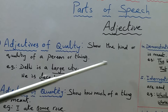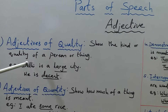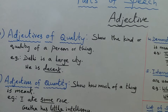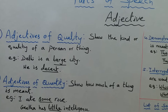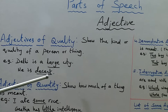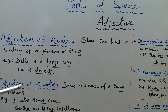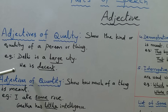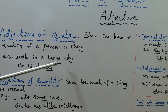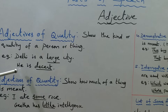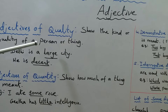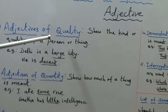Adjectives of quality show the kind or quality of a person or thing. They tell us the quality of a person or object. For example: 'Nally is a large city' and 'He is decent.' Here, 'large' and 'decent' fall under the category of adjectives of quality.